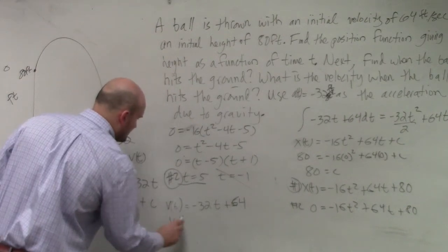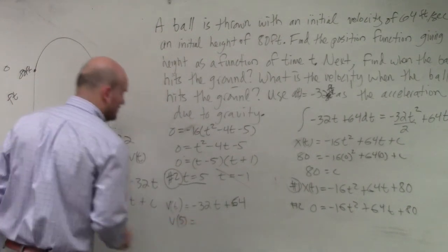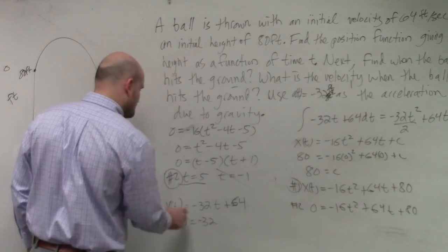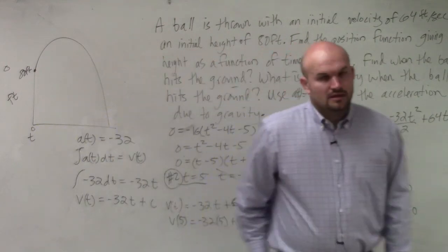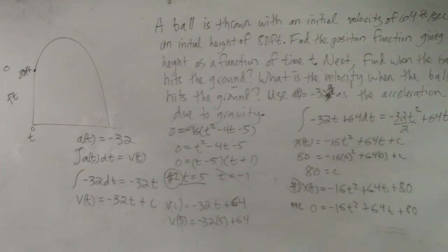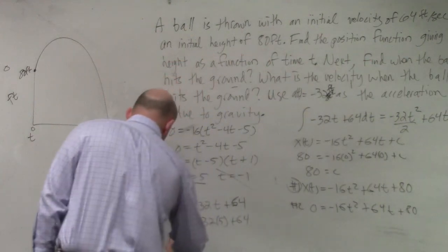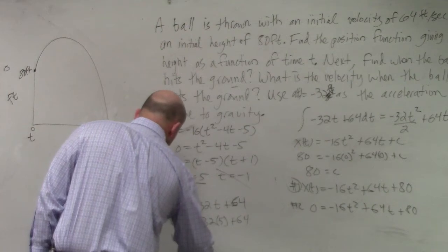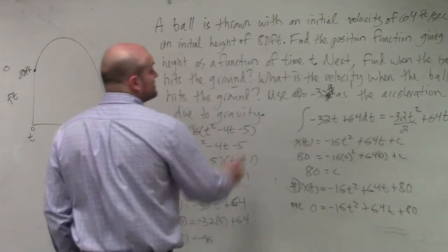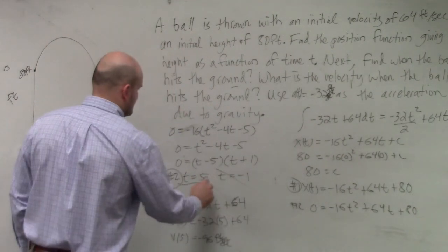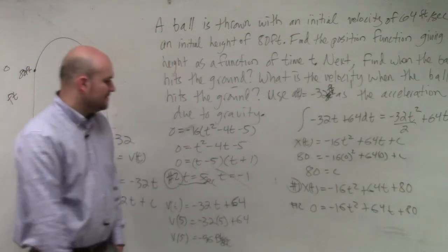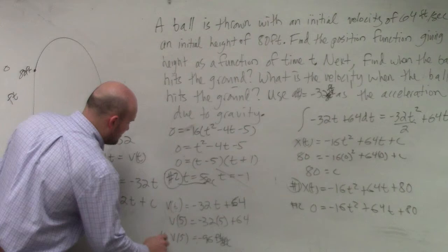So therefore, v sub 5 equals negative 32 times 5 plus 64. So let's see, 2, 64, 4 would be 128, 30, 60, 160, so it'd be negative 96. So v sub 5 would equal negative 96. And that is a velocity, so that's going to be feet per second. And this would actually be in seconds. And that's the question to number three.